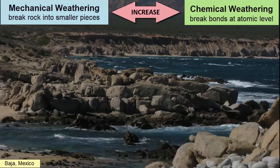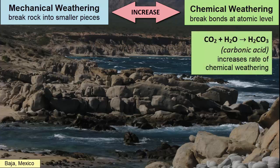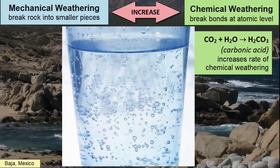Another thing that can speed up chemical weathering is acidic water. The most common naturally formed acid is carbonic acid, which forms whenever carbon dioxide mixes with water — a common occurrence in all natural waters on our surface. This acid is what makes carbonated beverages acidic and what can increase the acidity of your stomach when you drink sodas in high amounts. Water rich in carbonic acid will make chemical weathering happen faster.